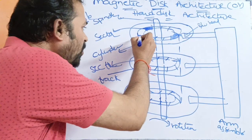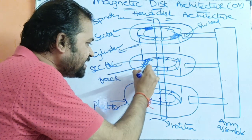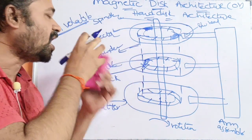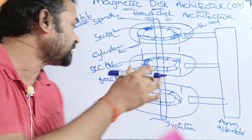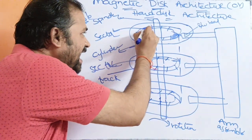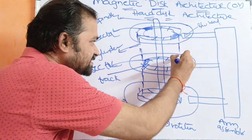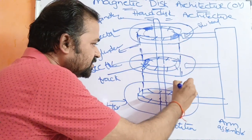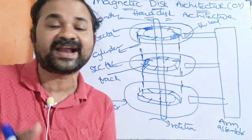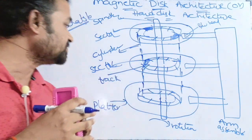Here we have the cylinder. The set of tracks grouped together forms a cylinder. So we are combining these tracks, and that combination of tracks forms a cylinder.